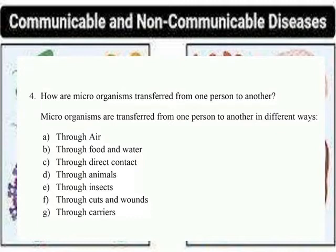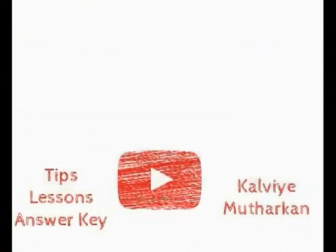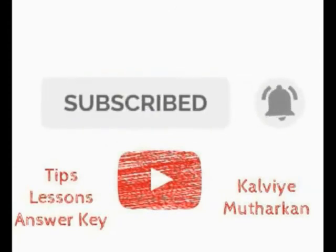Practices to prevent communicable diseases: Hands should be washed with soap and water regularly before eating. Food and water are easily contaminated by germs, so exposed food materials should not be consumed. Heat kills germs; milk and drinking water should be boiled before drinking. Patients suffering from diseases like chicken pox, tuberculosis, etc., should stay isolated so others do not catch the disease. Waste materials should be dumped properly and the surroundings of the house should be kept clean.